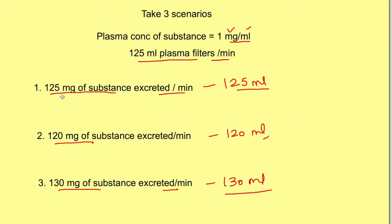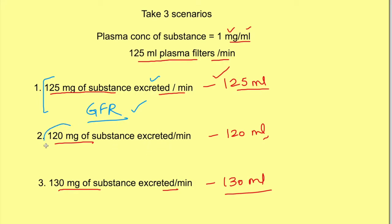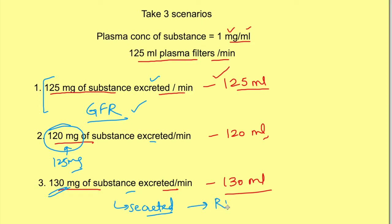In the first scenario, the clearance of plasma equals the glomerular filtration rate — whatever is filtered is excreted, with neither secretion nor reabsorption. Any substance that follows this can be used for estimation of GFR. In the second scenario, less substance is excreted than filtered, meaning some has been reabsorbed in the tubules. In the third scenario, more substance is excreted than filtered, meaning the substance has been secreted in the tubules. This third type of substance is used for estimation of renal plasma flow.